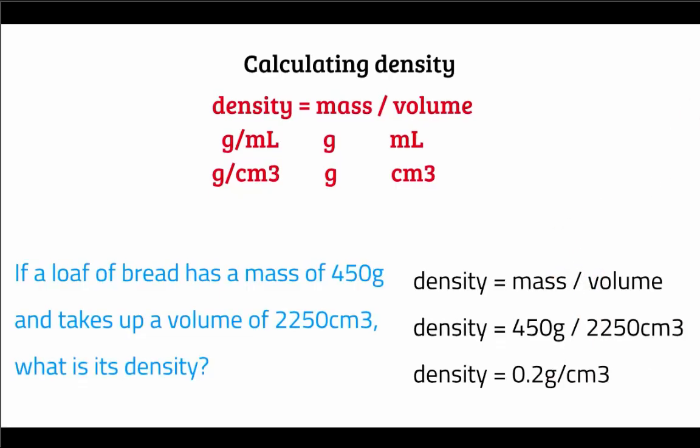Then using a calculator, 450 divided by 2250 is 0.2. Note that I've taken our units for density from the units we were using for mass and volume. The mass was in grams, the volume was in centimeters cubed. Therefore our units for density this time are grams per centimeters cubed.